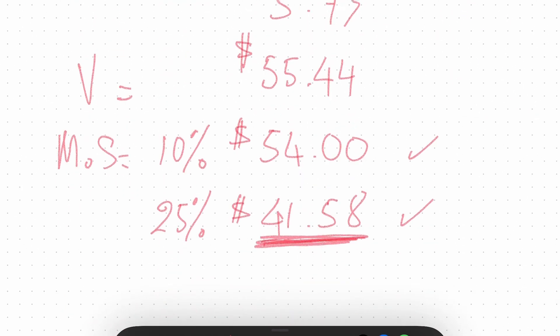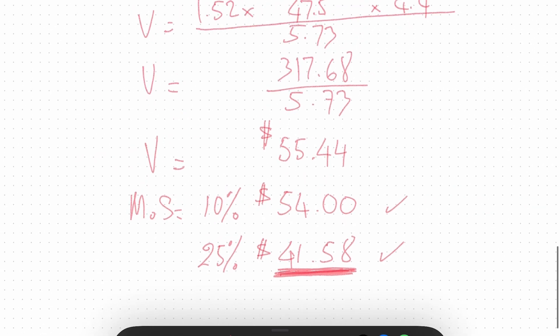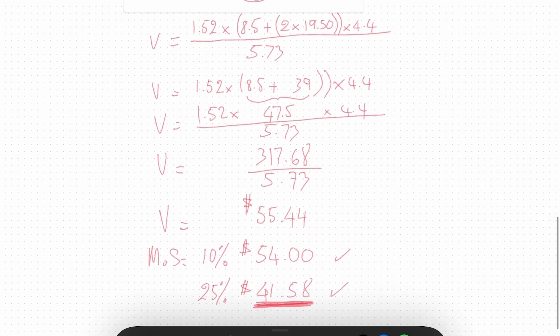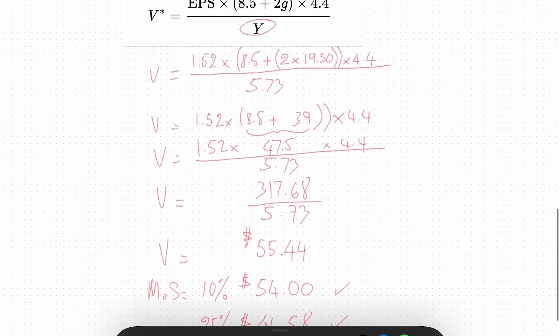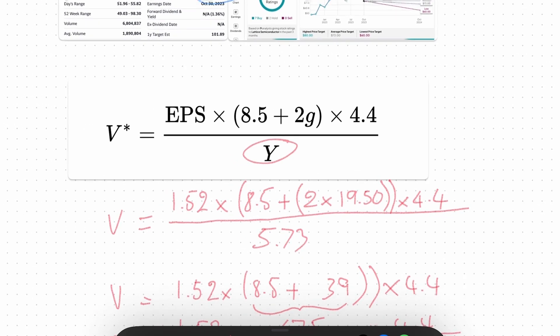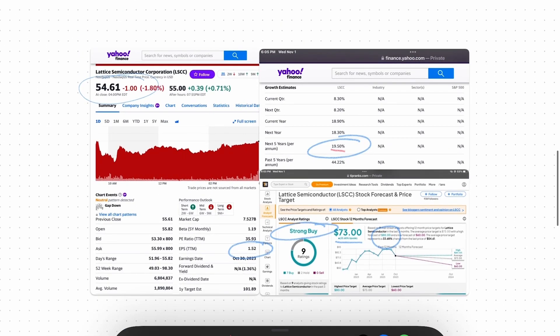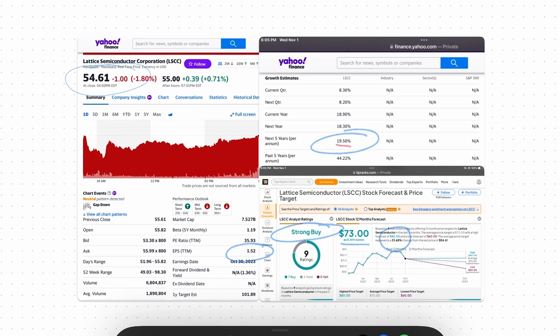I'm watching for the share price to drop to somewhere near $41.58 so that I can get some and add to my portfolio. So what do you think? What do you think of intrinsic value, intrinsic formula? Do you have any experience with it? Have you had any good or bad experience with it? Let's share so that we all can learn from each other.